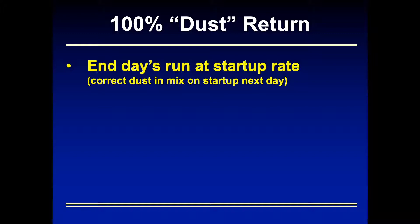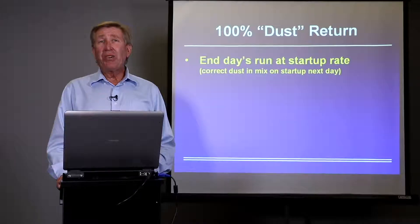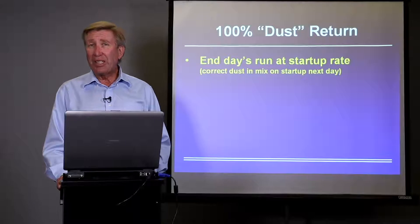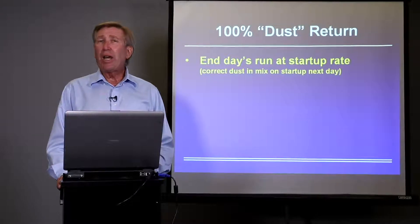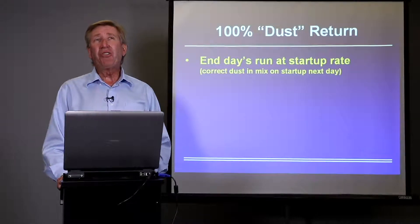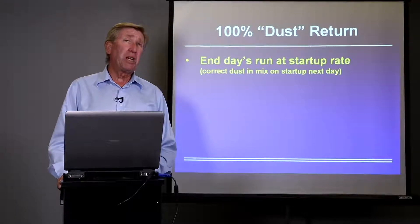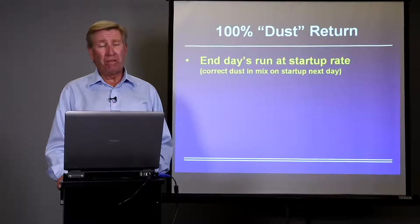End the day's production at the next morning's startup rate. There are usually three rates on a plant: the startup rate, the normal production rate when everything's working fine, and the go-fast rate when aggregate is dry and high production is required. Plant operators tend to think in these three terms: the startup rate, the Cadillac rate, and the we-need-to-go-fast rate.